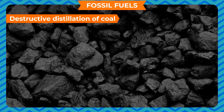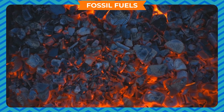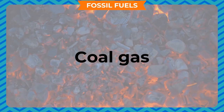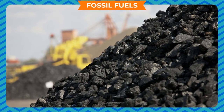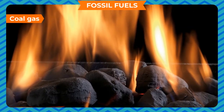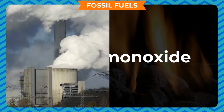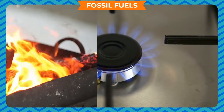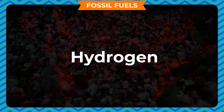Destructive distillation of coal. On heating coal strongly in a closed tube in the absence or limited supply of air, various components like coal tar, coal gas, ammoniacal liquor and coke are formed. This process is called destructive distillation of coal. Coal gas is a mixture of gases like hydrogen, methane and carbon monoxide. It has a high calorific value. It is used as cooking gas and for lighting purposes, and also as a reducing agent due to the presence of hydrogen.